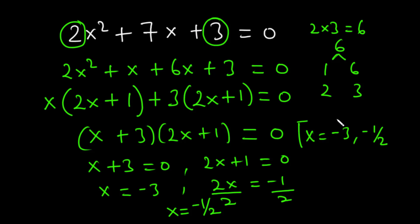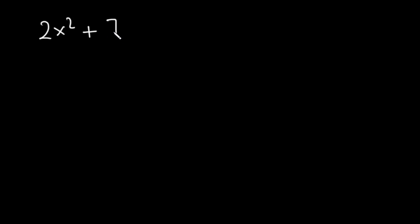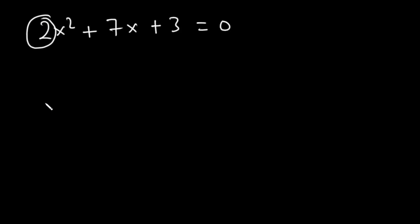That is how to find the roots of a quadratic equation using factorization. Now let's approach the same problem — 2x squared plus 7x plus 3 equals 0 — using the completing the square method. The first step is to make sure that the coefficient of the x squared term is 1, so we need to factor 2 out.